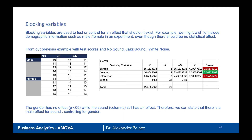Another notion in ANOVA is blocking variables, which are used to test or control for an effect that shouldn't exist. This is nothing more than adding another variable into the two-way ANOVA where we hope there is no effect. In other words, we've included a second variable but our assumption is that it should have no effect — we're just testing to make sure. This is what we call controlling for a variable.